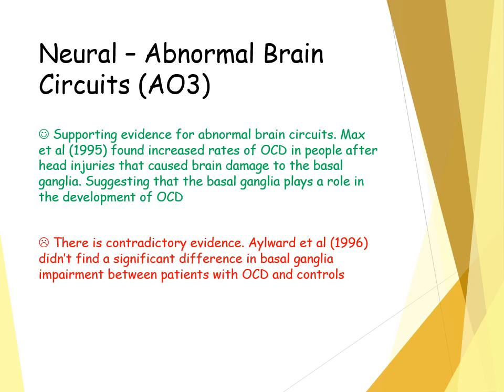Biological reductionism doesn't take into account other factors or explanations. It could be that a person has OCD because they observed and learned that behaviour through their environment, which could explain high concordance rates in family and twin studies. They may have observed a person displaying characteristics of OCD, and through vicarious reinforcement and social learning theory, they developed it through observation, imitation, and indirect reinforcement.